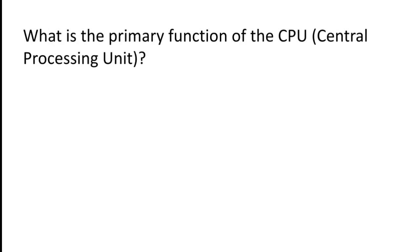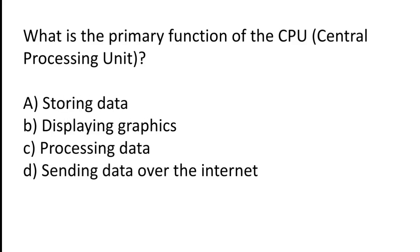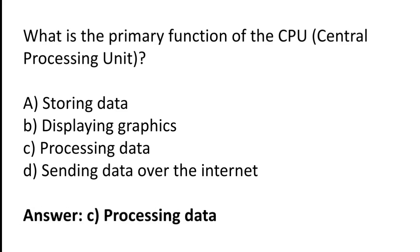What is the primary function of the CPU (Central Processing Unit)? Storing data, Displaying graphics, Processing data, Sending data over the internet. The correct answer is option C — the primary function of the CPU is processing data.